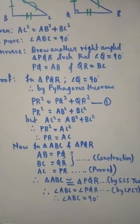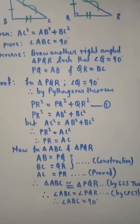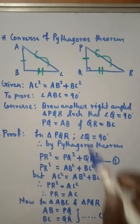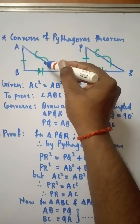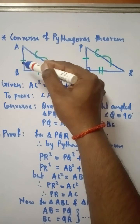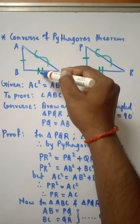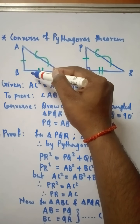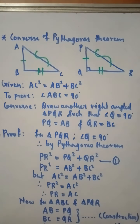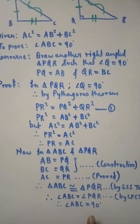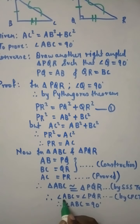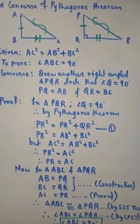Therefore we can conclude that in a triangle, if the square of one side is equal to the sum of the squares of the remaining two sides, then the angle opposite to the first side is a right angle. We have proved that angle ABC = 90°. This was all about the converse of Pythagoras theorem. Hope you all understood — please like and share this video with your friends. Thank you so much for watching.